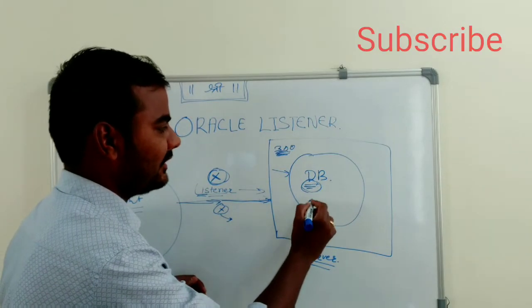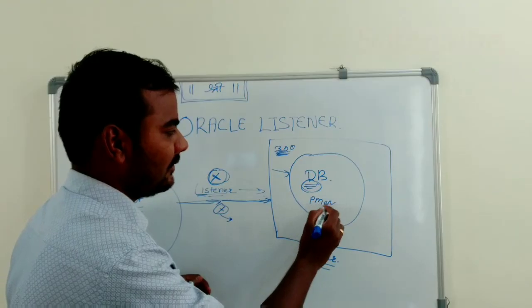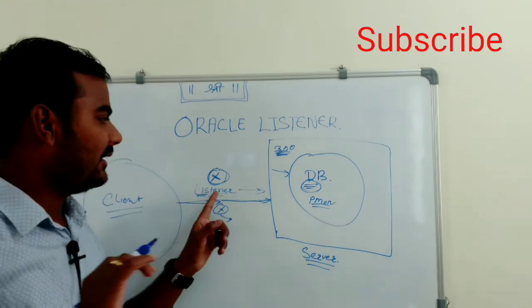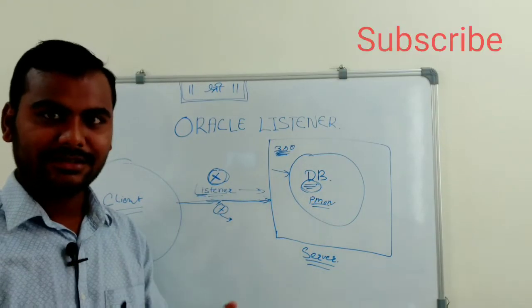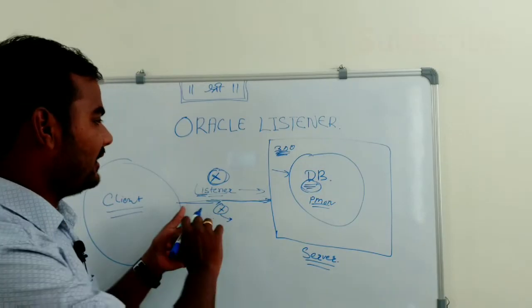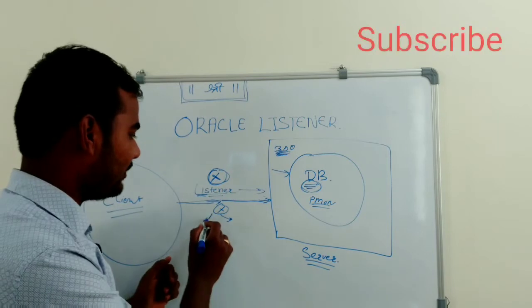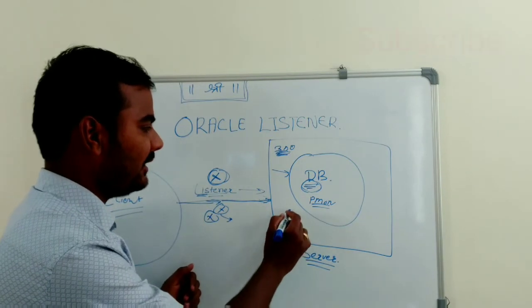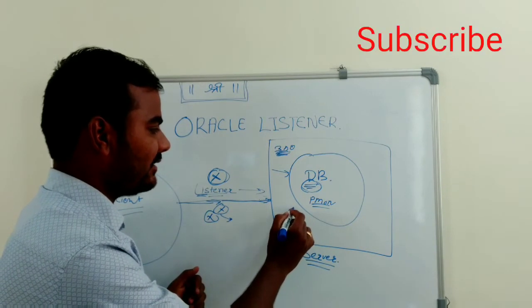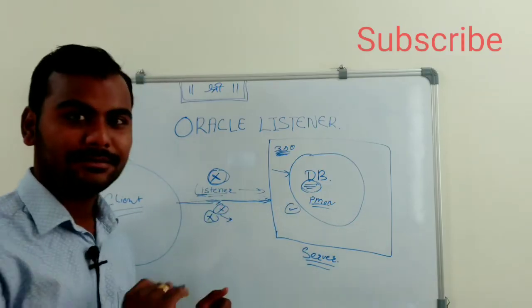And database, again it's a pmon. There is no connection between the listener and the pmon. It is there because listener needs to queue the connection to the pmon only, but if in case your listener goes down, your pmon will be in its own state. There will not be an impact.